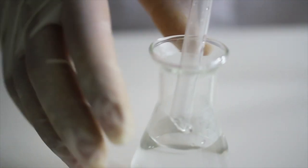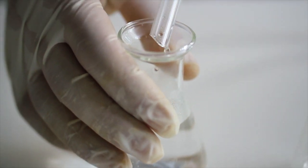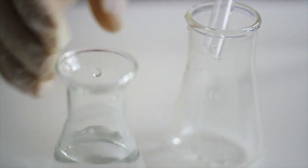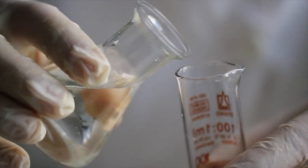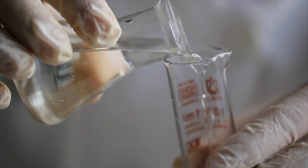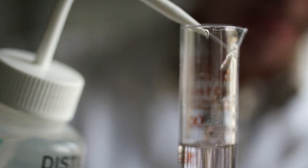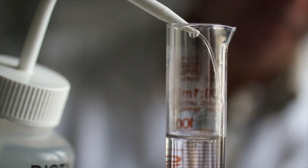Cando xa sabemos que todo o alcohol pasou a este colector, recollemos a mestura hidroalcohólica e pasámola a probeta. Temos que seguir engadindo auga ata os 100 ml, que era o volumen inicial de viño.